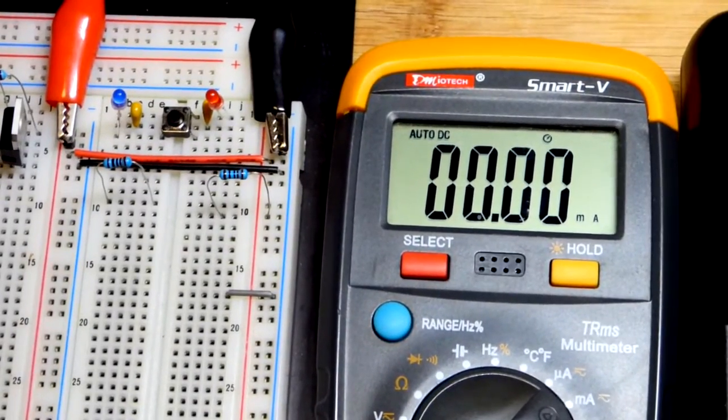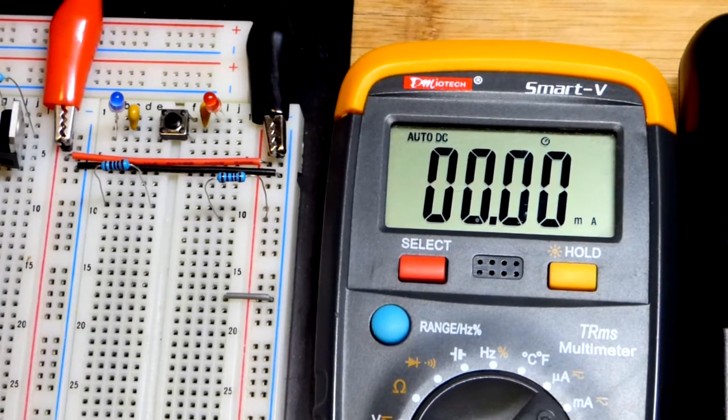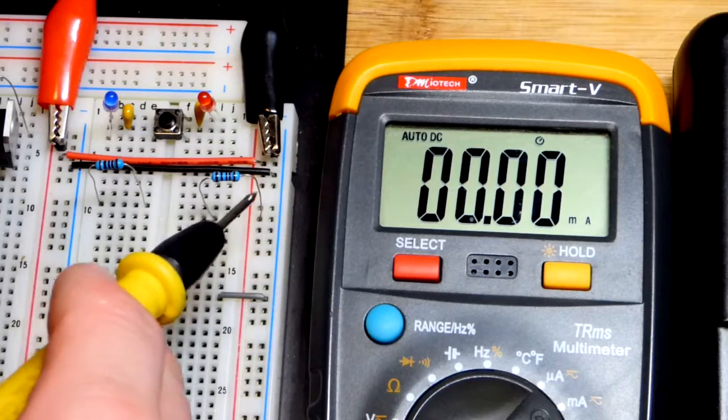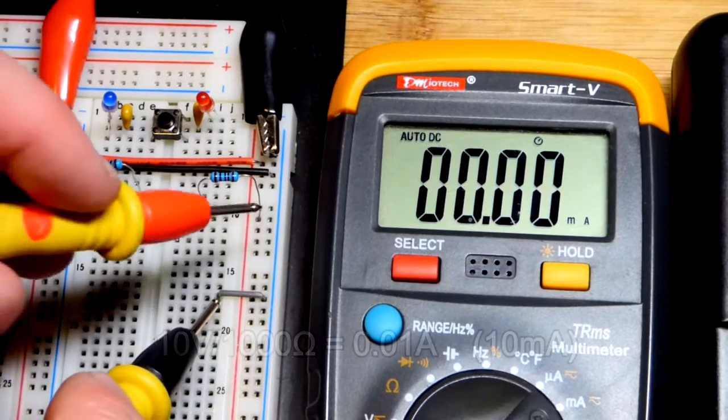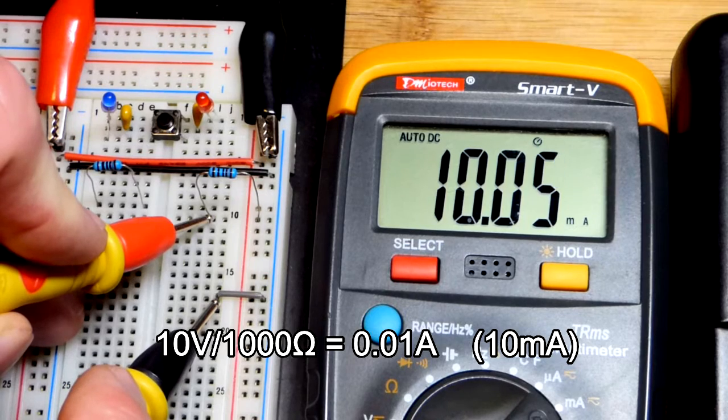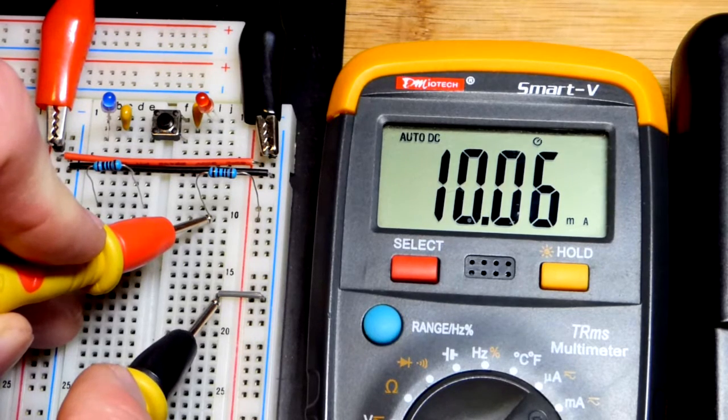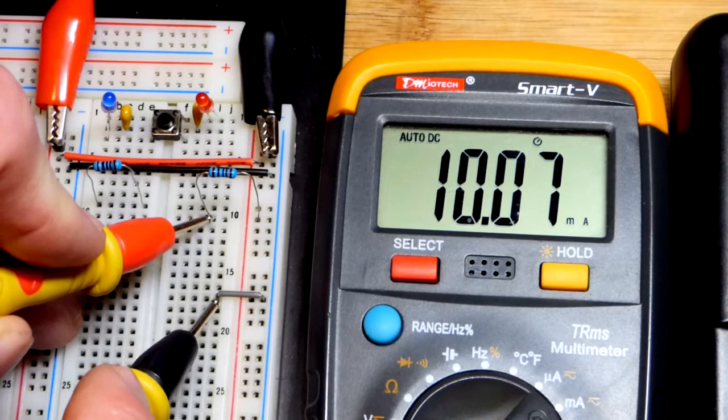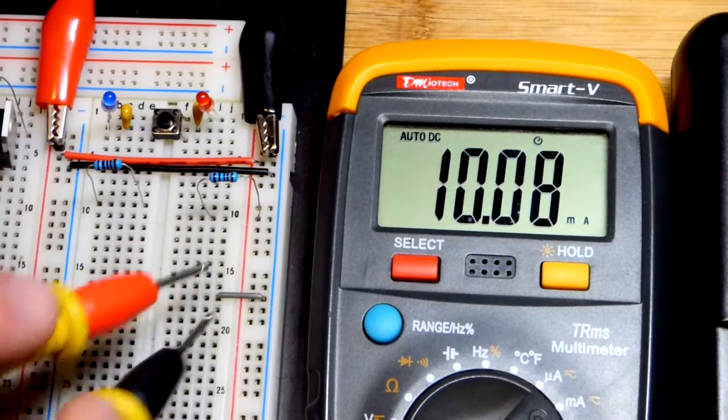We have to complete the circuit to measure the current. So we're just going to look at one resistor right now, has 10 volts across it. It's a 1 kilo ohm resistor, so that gives us 10 milliamps of current. So at 10 volts divided by a thousand ohms of resistance is 0.01 amps or 10 milliamps.